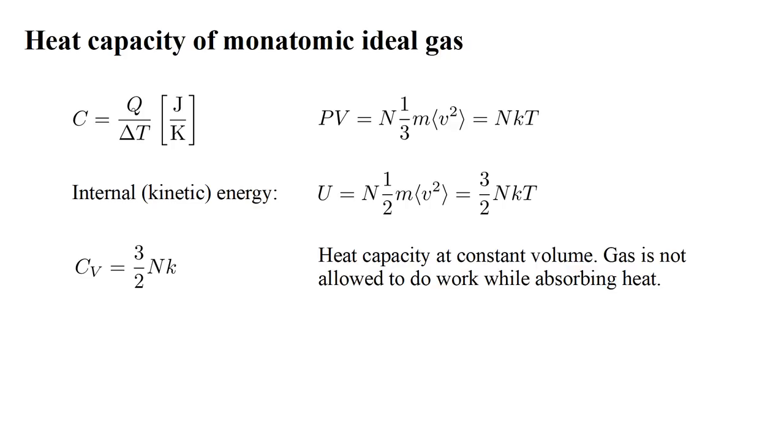More precisely, this is the heat capacity at constant volume, denoted with a subscript V. We could also define a heat capacity at constant pressure and obtain a different value. We will come back to this idea in a later video. If we set N to Avogadro's constant, we find the molar heat capacity at constant volume is three-halves the gas constant, or 12.47 joules per mole kelvin. This predicts that the heat capacity per mole of all monatomic gases will be the same.